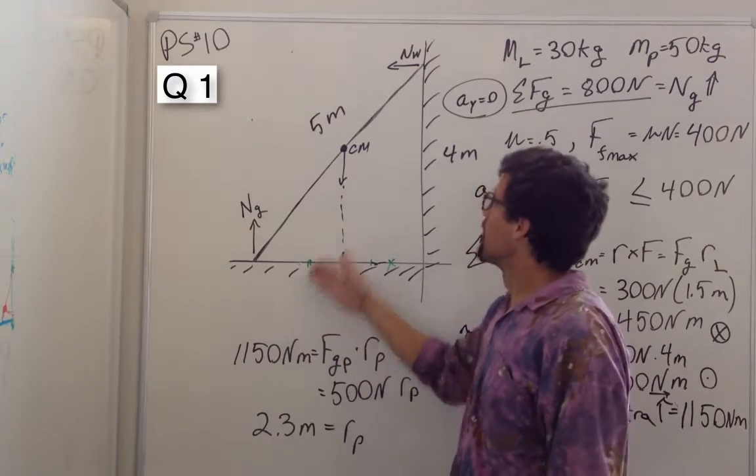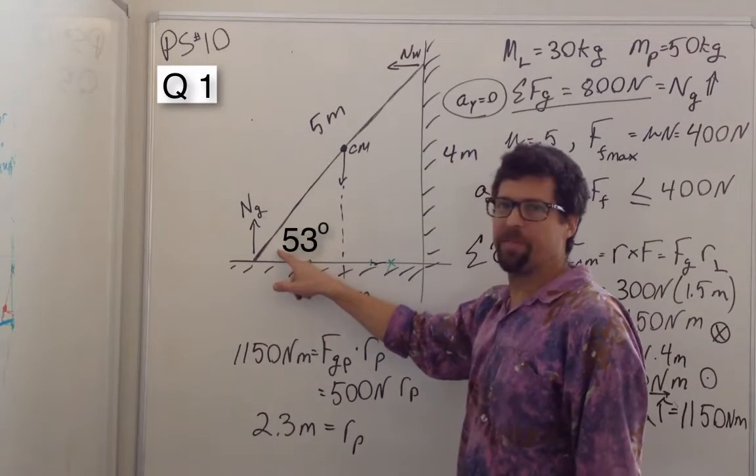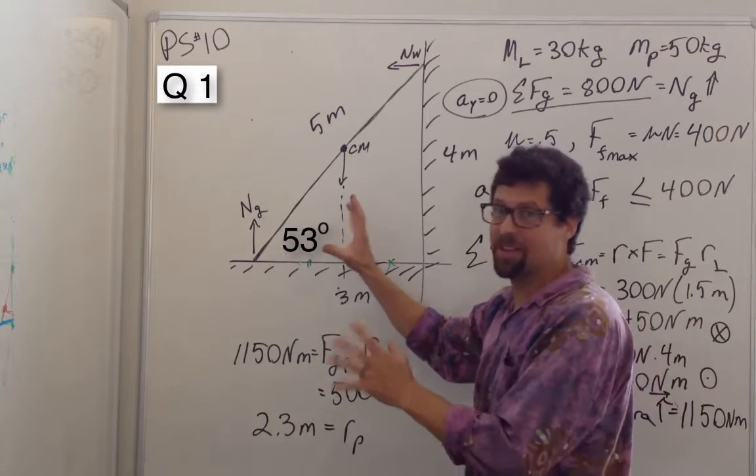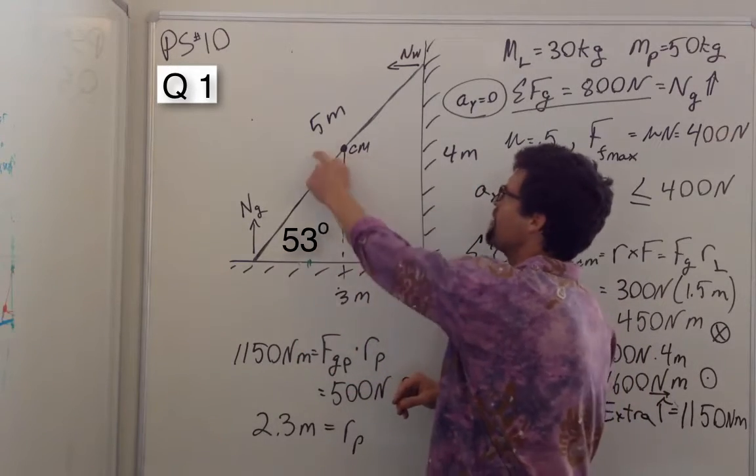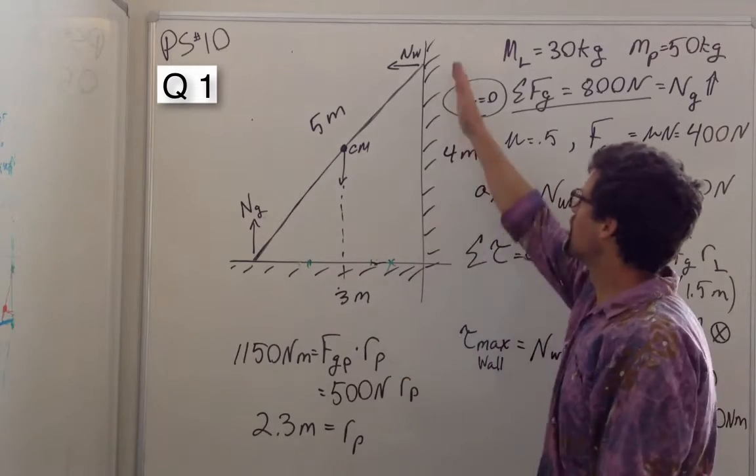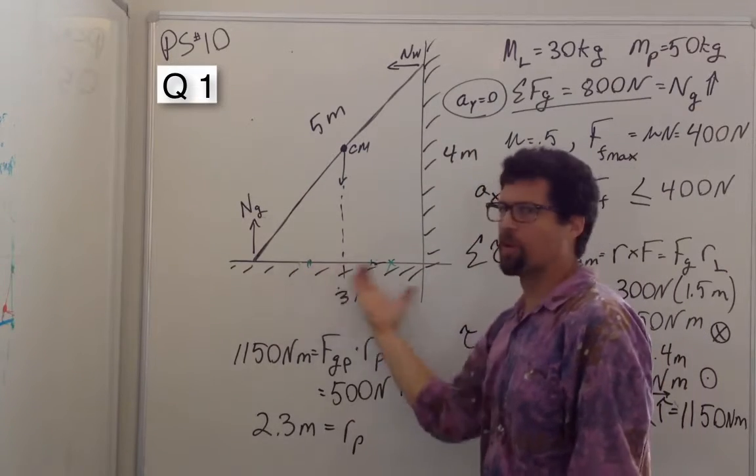Okay, so let's look at the ladder problem. We have a 5 meter ladder up at 52 degrees. So actually, if you work it out, this is a 3, 4, 5 right triangle. So this is going to be 4 meters high, 3 meters from the wall.